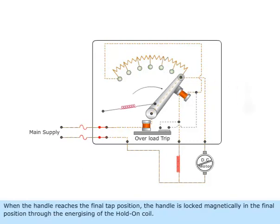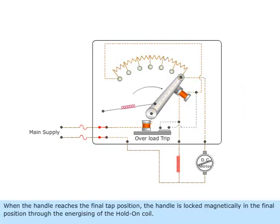When the handle reaches the final tap position, the handle is locked magnetically in the final position through the energizing of the hold on coil. The motor runs now at normal speed.